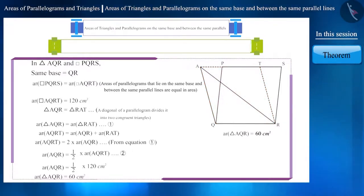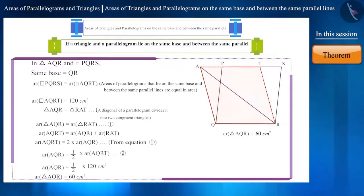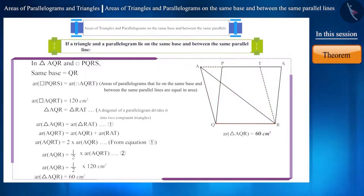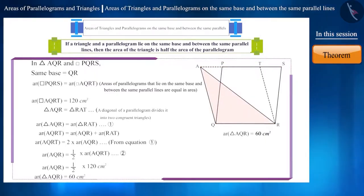Can we say that if a triangle and a parallelogram lie on the same base and between the same parallel lines, then the area of the triangle is half the area of the parallelogram?